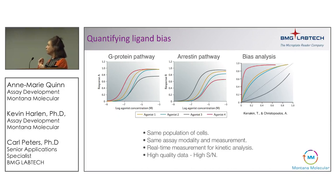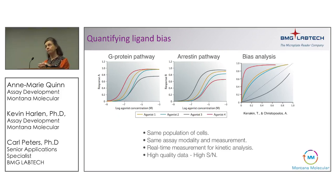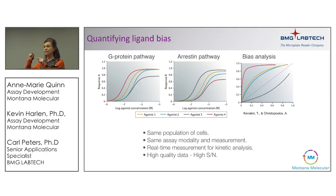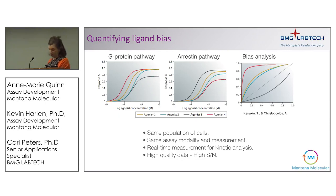One really powerful way to quantify biased agonism is by comparing the kinetics of those different responses. We've been doing a lot of work on turning kinetic data into a bias measurement. To rate your compounds based on bias, you need high-quality data, because the compounds will have responses that are close together — so you need really high signal-to-noise. We'll show you data collected on the BMG.